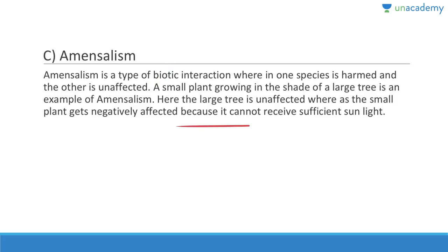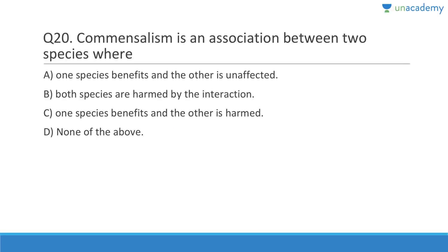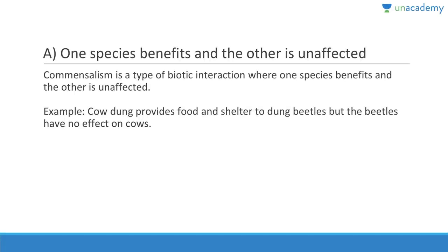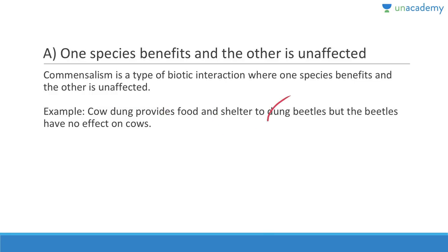Last question: Commensalism is an association between two species where one species is unaffected but the other benefits. Answer is A — it is exactly the opposite of amensalism. Commensalism is a type of biotic interaction where one species benefits and the other is unaffected. For example, cow dung provides food and shelter to dung beetles, but the beetles have no effect on cows whatsoever. Thank you for watching this lesson.